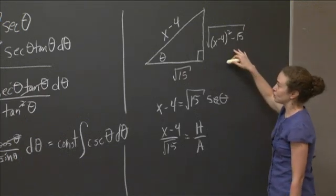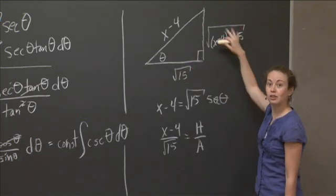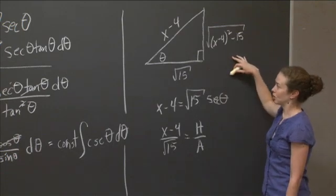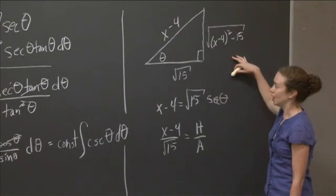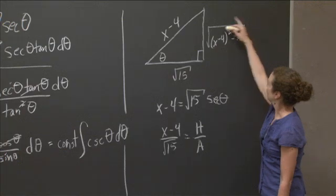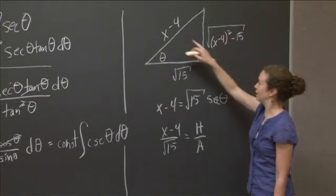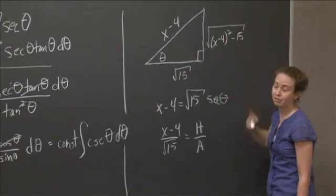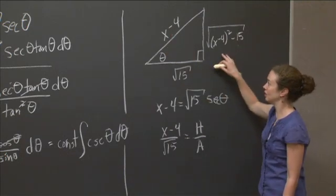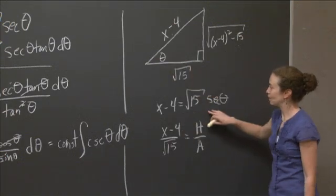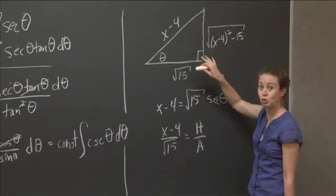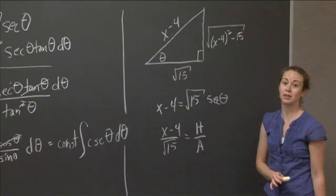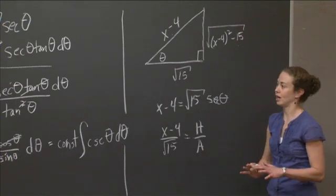So whatever I have in terms of theta, I just look at this triangle. If I had in my answer sine theta, I would replace sine theta by this square root divided by x minus 4, because that's what sine theta is. And so that's how I finish this type of problem, always. I want to have a picture of this triangle, label a theta, use my substitution to give me what the two of the sides are, use the Pythagorean theorem to get the third side. So that's the strategy.